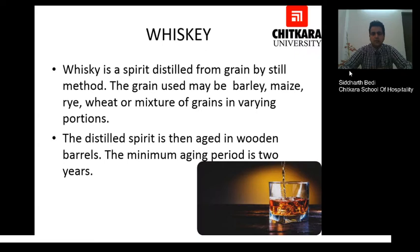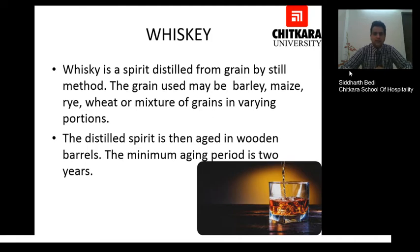The first topic we are going to discuss is whisky, which is a spirit distilled from grain by the still method. The grain used may be barley, maize, rye, wheat or a mixture of grains in varying proportions. The distilled spirit is then aged in wooden barrels, with a minimum aging period of two years.